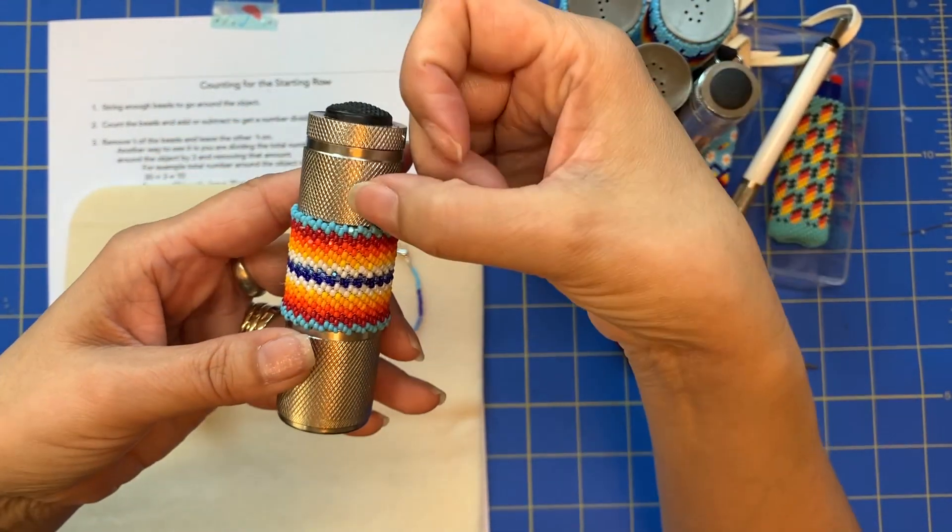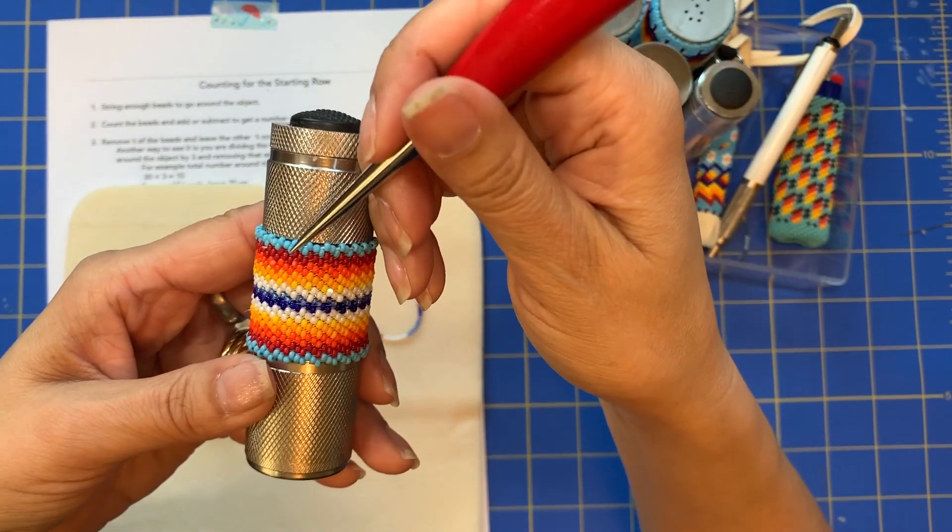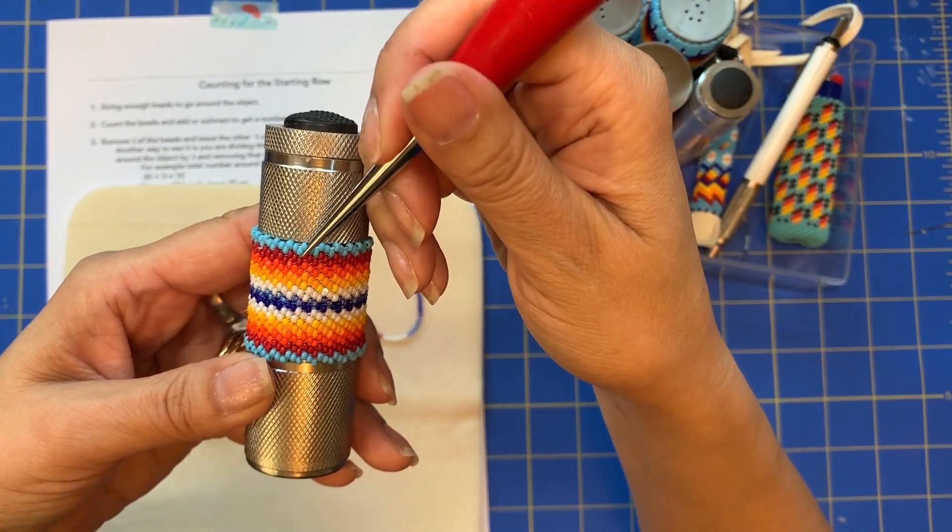These are just rows and you can see it's repeating one, two, three, one, two, three.